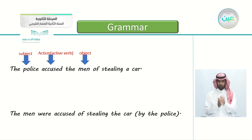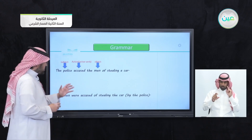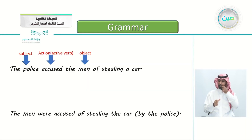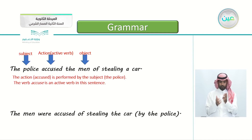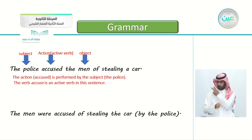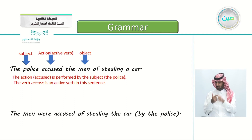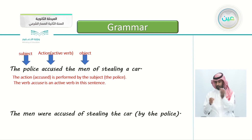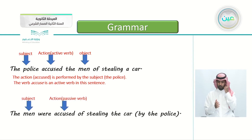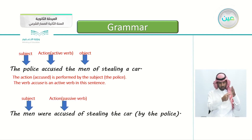Now look at the second sentence. We rearrange the sentence just a little bit: 'The men were accused of stealing the car.' In the first sentence, the action 'accused' is performed by the subject, the police — so the police is the doer of the action, and the verb 'accused' is active. When the sentence is subject-verb-object, this is an active sentence. In the second sentence, the object 'men' is moved to the beginning to act as a subject.